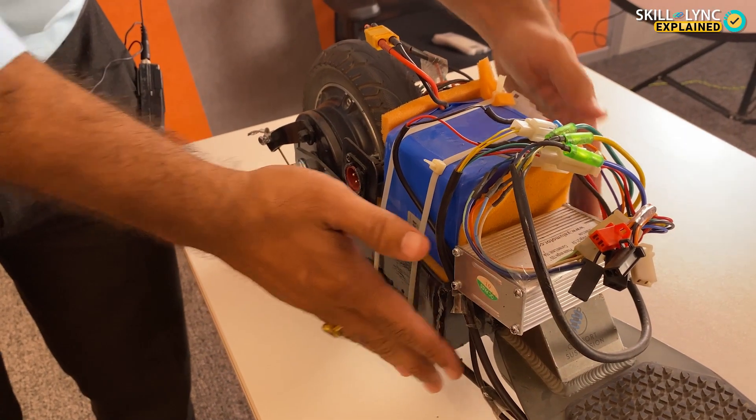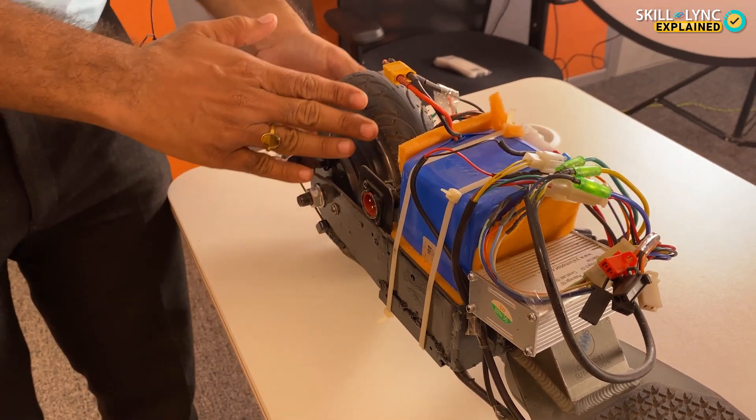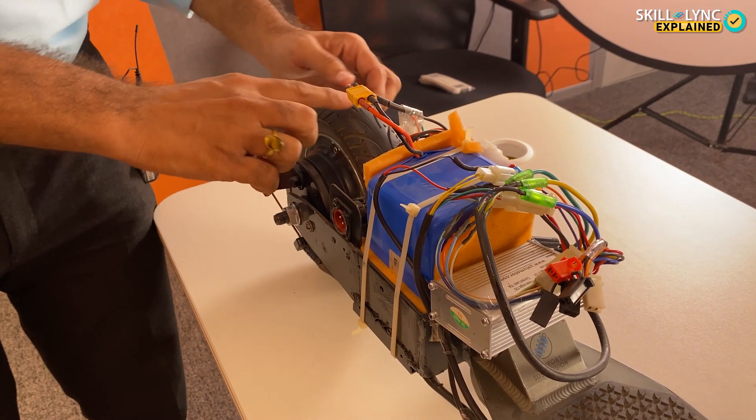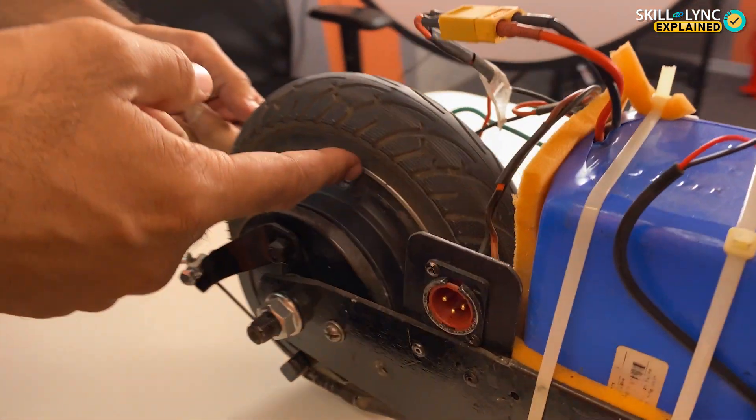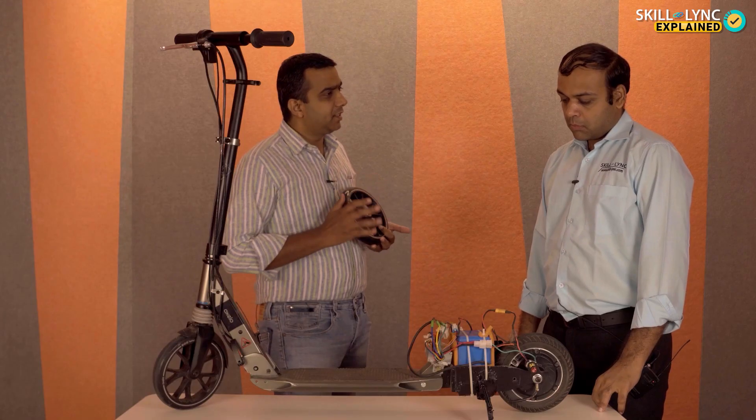Now with the housing ready, we have taken a 350 watt BLDC motor which you can see actually looks like a wheel. What exactly is a BLDC motor?